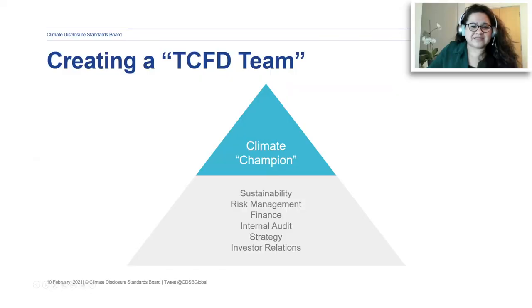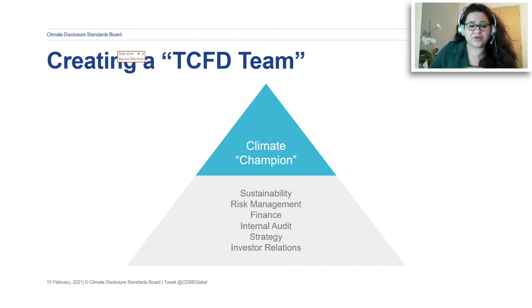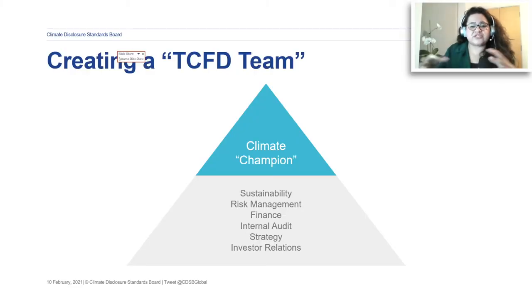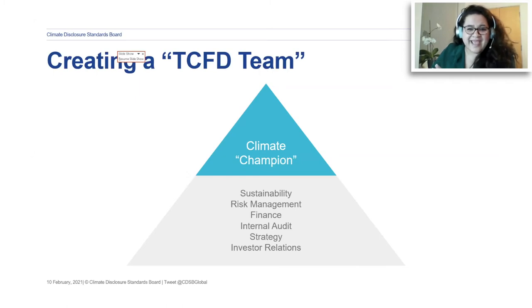To focus on creating a TCFD team: in order to get a holistic picture of climate-related risks and opportunities, you should consider forming an internal working group. From working with companies, the most successful approaches are those that have tackled the issue across the organization — not just in a silo within the sustainability team. There have been top-down approaches, where senior leadership takes the lead, and bottom-up approaches, where different functions come together. In either case, it's important to find a climate champion — ideally someone within senior leadership or on the board — who understands these issues and can set the tone from the top.